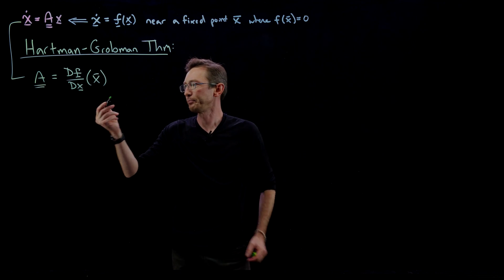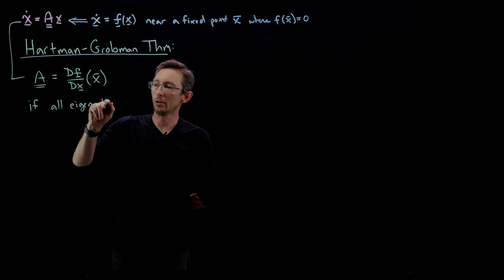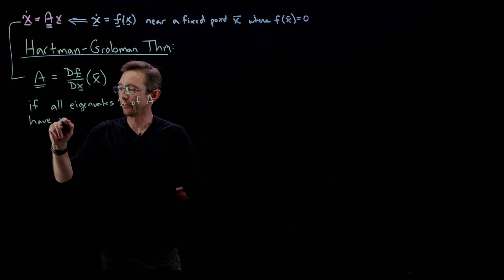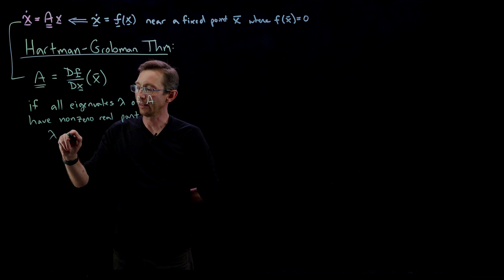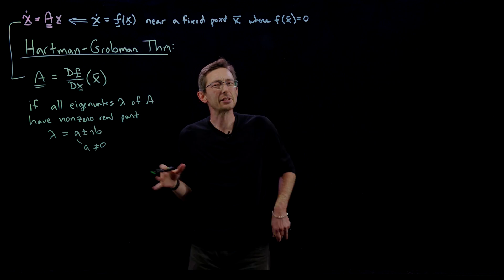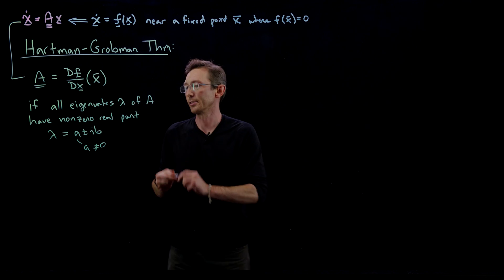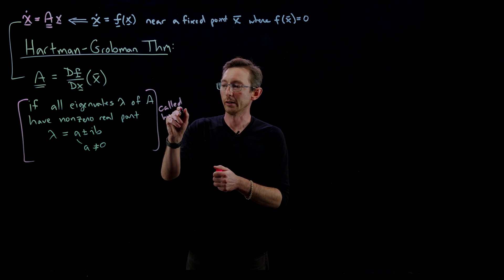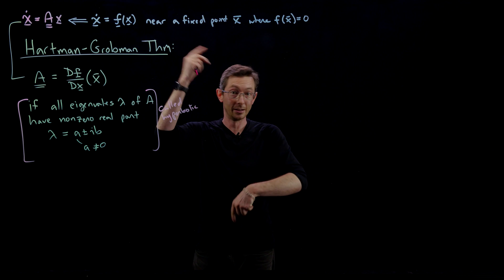Specifically, the Hartman-Grobman theorem says that if all the eigenvalues λ of A have non-zero real part — meaning they have the form λ = a ± ib where a is not equal to zero — these are called hyperbolic fixed points.